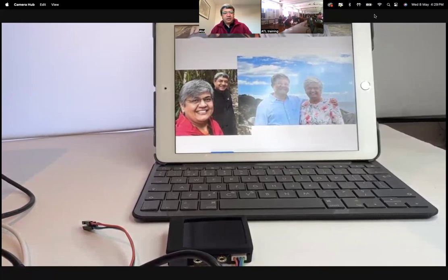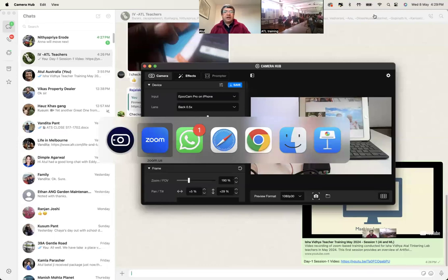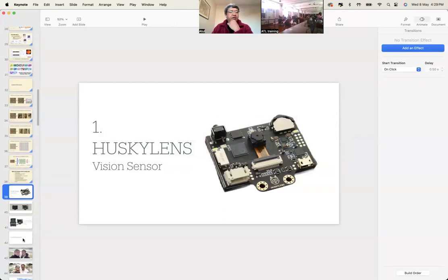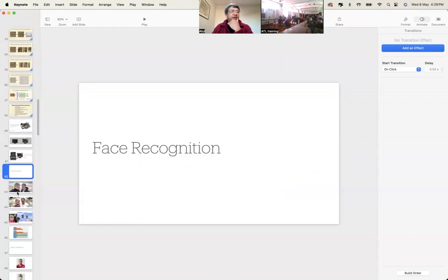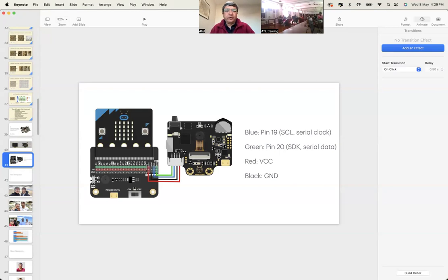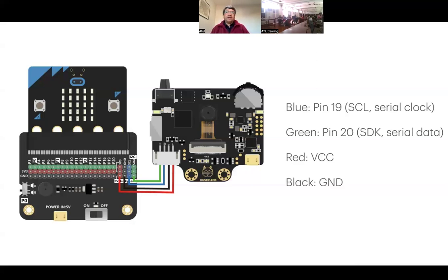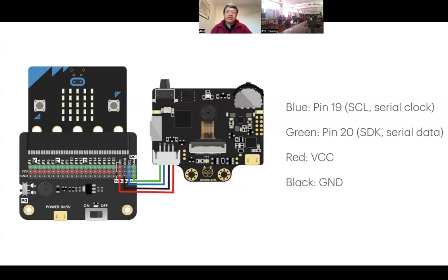Assuming it's working, let's go back. What we are going to do is use this face recognition and write a small program for microbit. To connect your HuskyLens to microbit, the four wires coming out are: the red wire which is VCC, the black wire which is ground, the blue wire which is called SCL (serial clock) — the way electronic devices talk to each other — and the green wire which is called SDA (serial data).